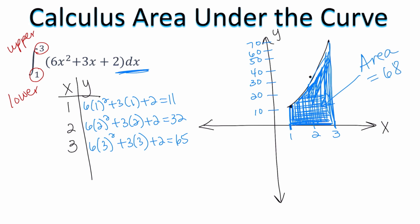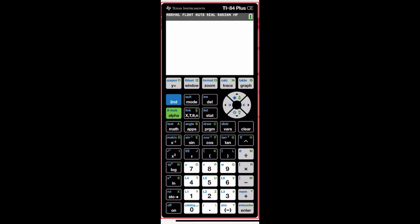Now what I want to show you is how to do this on the calculator. Okay so let's go ahead now let's look at the calculator. Okay so on our graphing calculator I'm going to go to y equals and I'm going to enter the equation 6x squared plus 3x plus 2.